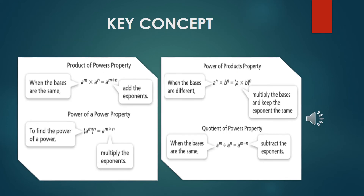To finish, remember all the properties. Number 1: if we need to solve a multiplication of exponential expressions with the same base but different exponents, we copy the base and add the exponents. Number 2: if we need to solve a multiplication of exponential expressions with different bases but the same exponent, we multiply the bases and keep the exponent the same.